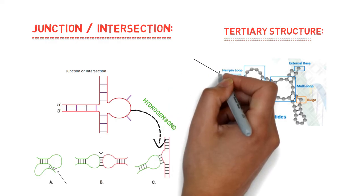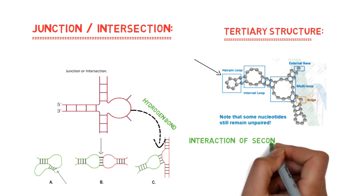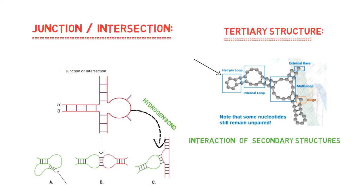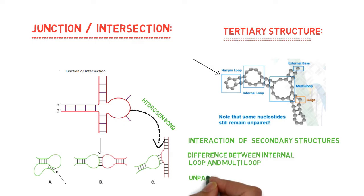For example, four nucleotides in a hairpin loop structure do the above figure. Indicate how these secondary structures come together, the difference between an internal loop and multi-loop, and the yet unpaired bases. The unpaired bases in the tertiary structure remain paired by abnormal folding called pseudoknots, but instead of pairing, they remain available for pairing.